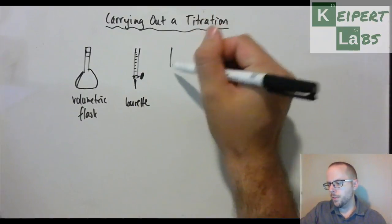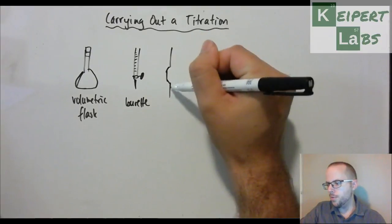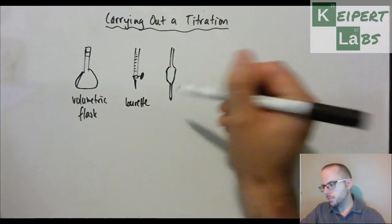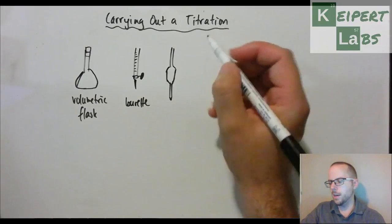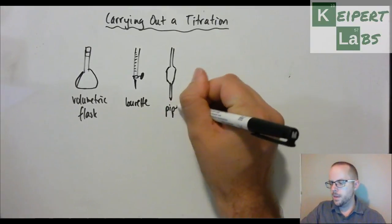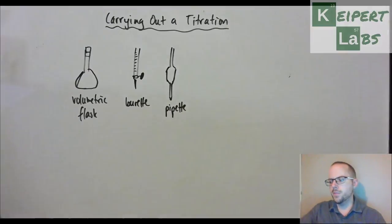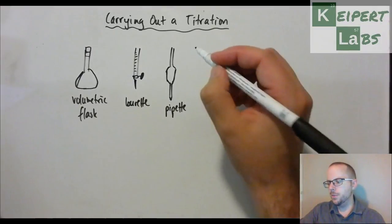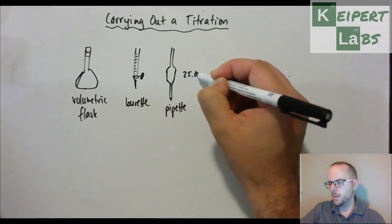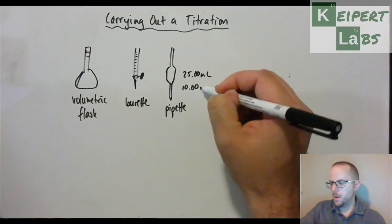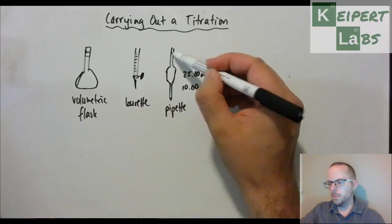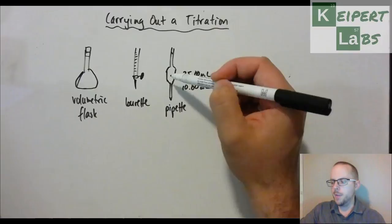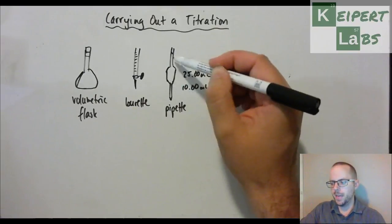Also in the spirit of being able to deliver known volumes of a solution, we have this one. This is called a pipette. The same sort of deal as with a volumetric flask. It can measure out one particular volume. We might have, say, a 25 ml pipette or a 10 ml pipette. It's got a little mark up the top here. This is called a bulb pipette because it's got this bit in the middle which is big and which is where most of the volume of that liquid is kept.